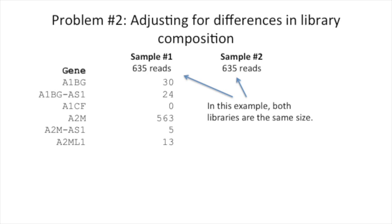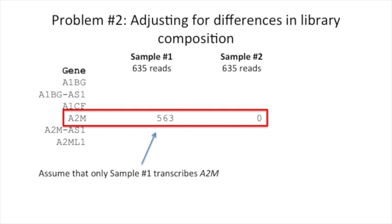Let's look at a specific example. In this example, both libraries are the same size. Both have 635 reads. Now, assume expression of all genes is the same with one exception. Assume that only sample number one transcribes the gene called A2M. To make matters worse, sample number one transcribes A2M at a very high level.